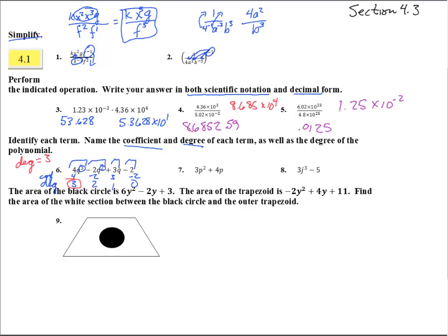Number 7 has two terms: 3p squared and 4p. The coefficients are 3 — just the number in front of the variables — and 4. The degree of each term: this one has degree 2, it's the exponent, and this one has degree 1. So the degree of the polynomial is the biggest one — degree equals 2.